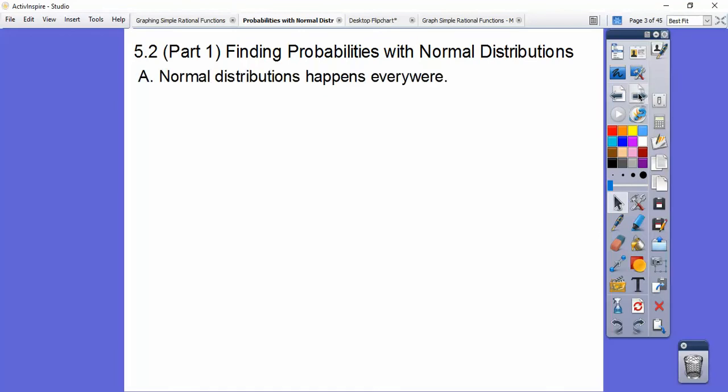So normal distributions happen everywhere in life. Pretty much in nature, anything in nature, shoe size of a particular age of somebody or weight of, say, one-year-old babies or 10-year-old kids or whatever, 10-year-old boys, 10-year-old girls. These all have normal distributions.